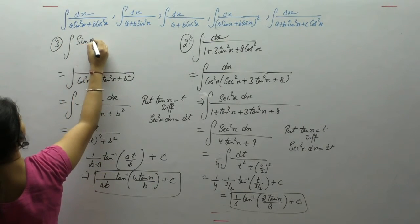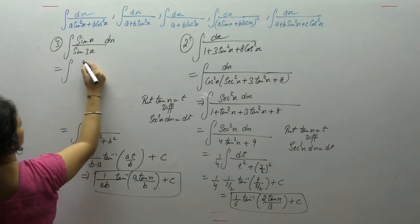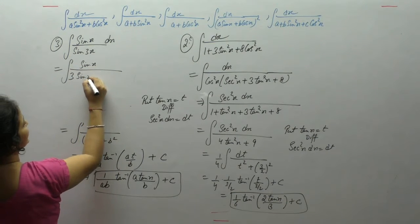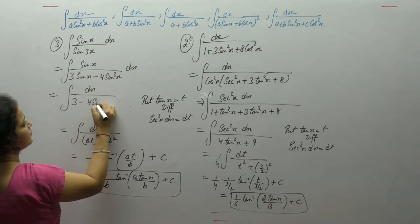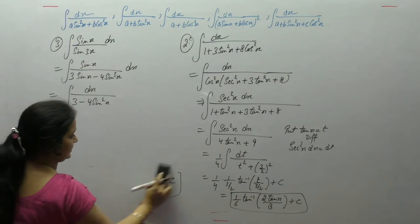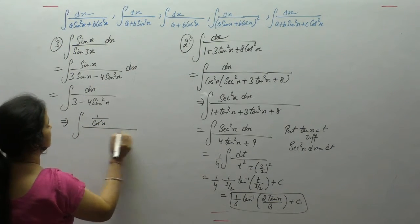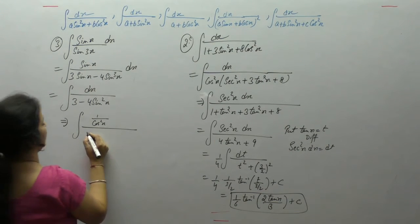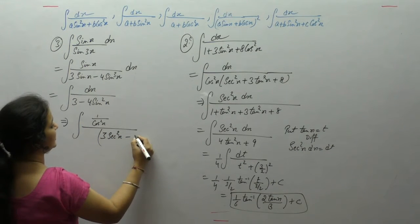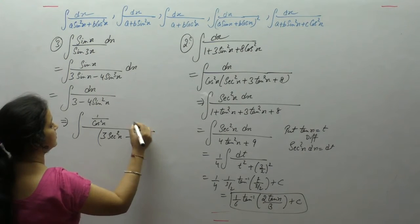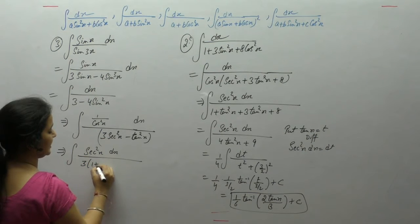Next is the integral of sin x upon sin 3x. For sin 3x we use the formula: sin 3x equals 3 sin x minus 4 sin³x. Take sin x common to get 1 upon 3 minus 4 sin²x. But we want terms in sec and tan, so multiply and divide numerator and denominator by cos²x. Then 3 upon cos is sec, sin upon cos is tan, and instead of sec² we write 1 plus tan²x.